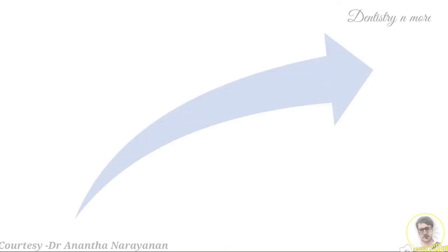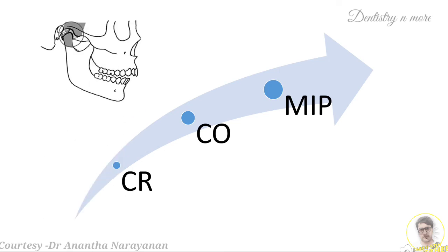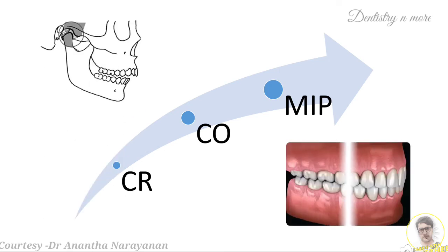When we go through these terms, it is better we go through them as centric relation first, then understand centric occlusion, and then finally move on to maximum intercuspation. Centric relation has been in existence for more than 100 years and there are almost 26 definitions proposed for centric relation alone. So this being the most confusing concept, if we are able to understand centric relation then maximum intercuspation and centric occlusion should be a piece of cake.